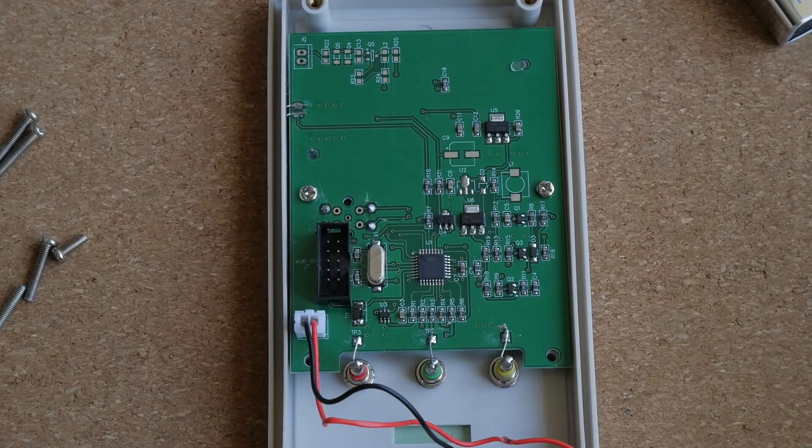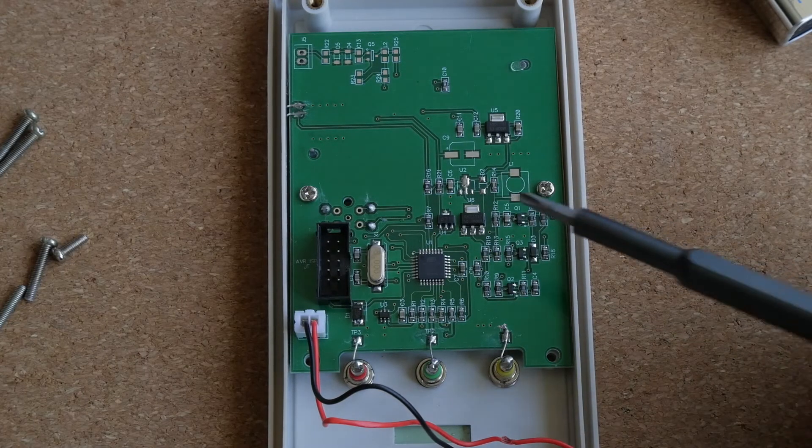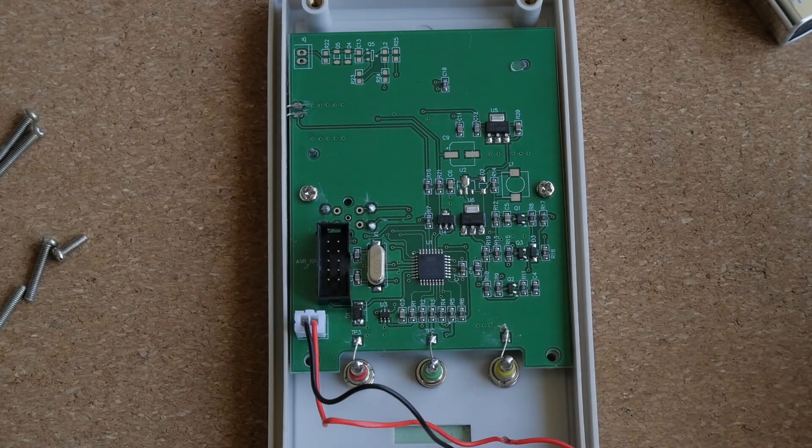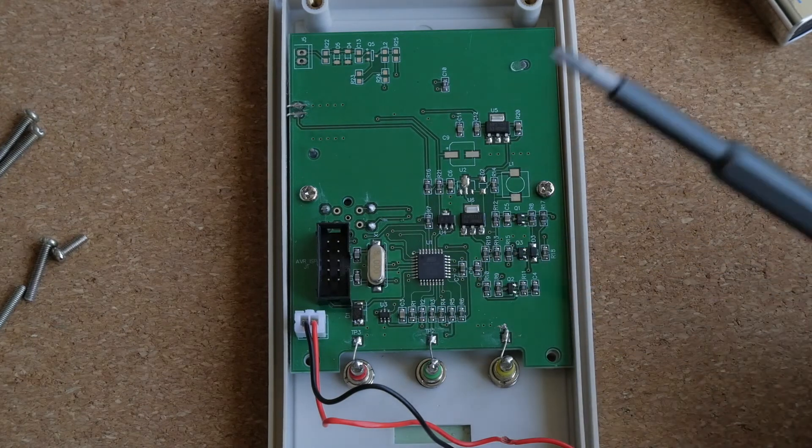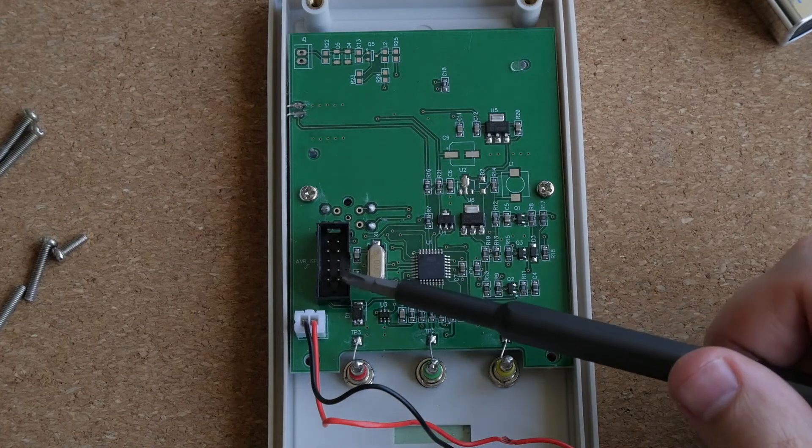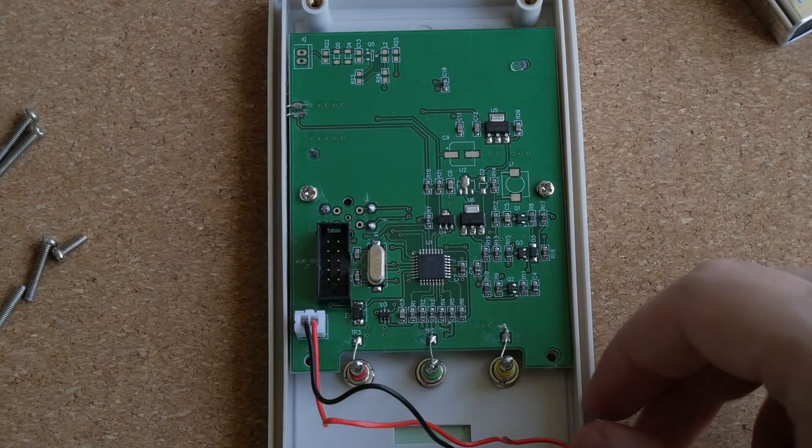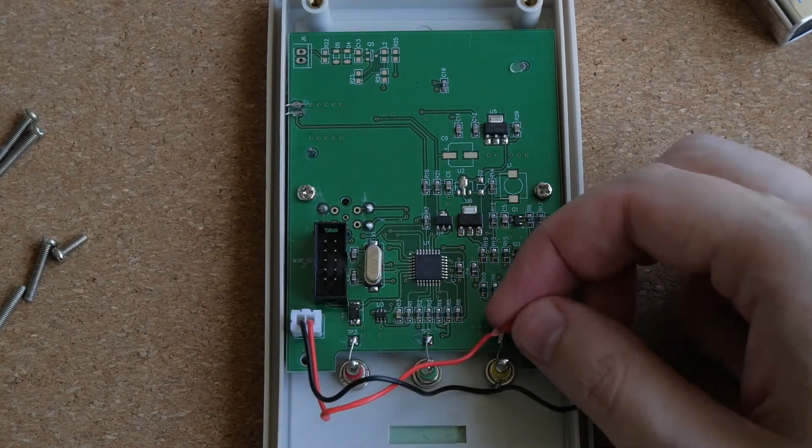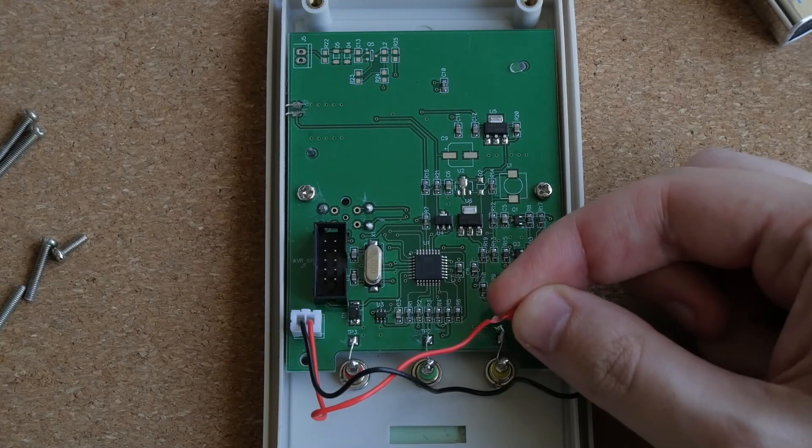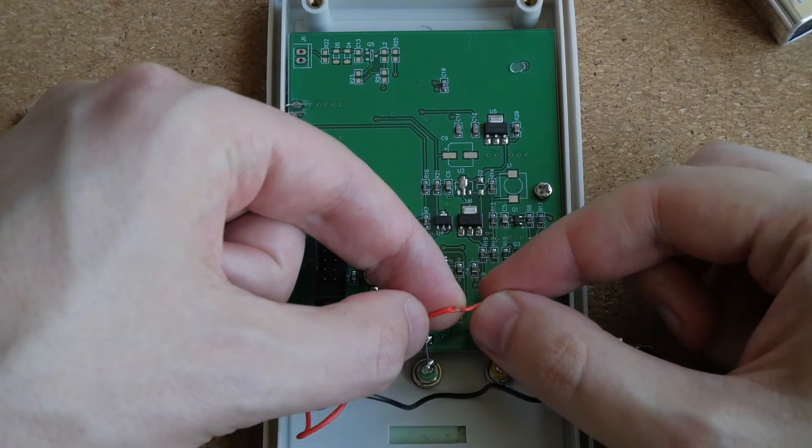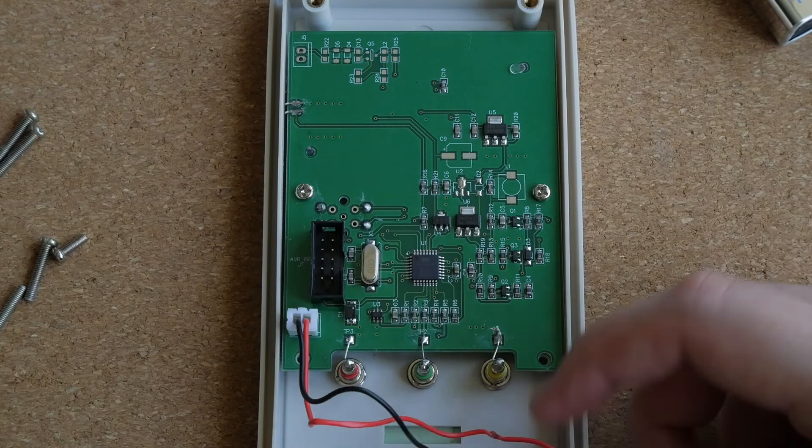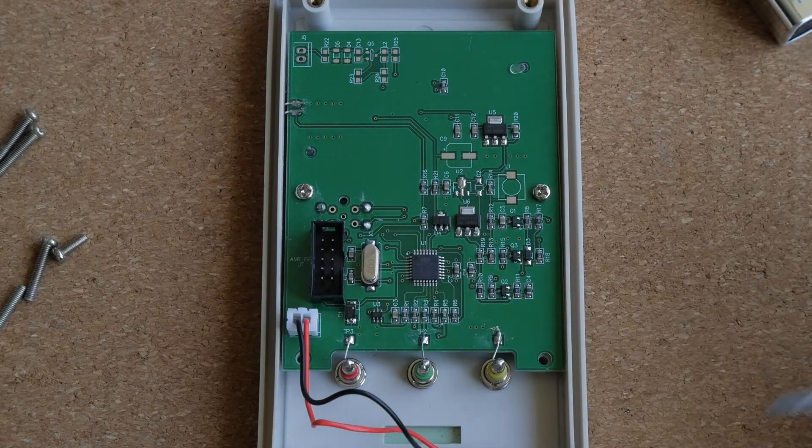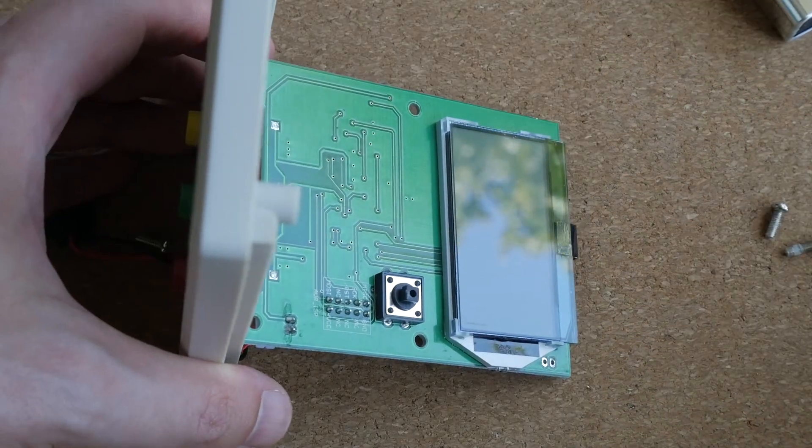The PCB is pretty nice quality. The heart of the device is this Atmega microcontroller. Here is the JTAG connector. It should be possible to flash a different firmware. Unfortunately as you can see one of the battery cables was pinched when the device was assembled. But overall the quality is pretty okay. Here you can see the other side of the PCB.